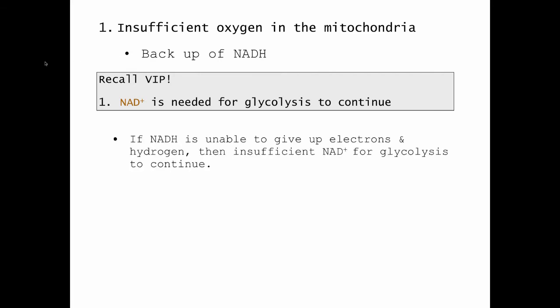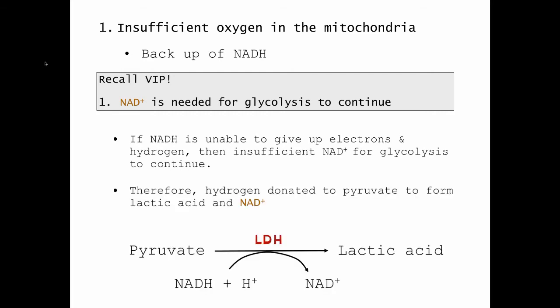So if NADH is unable to give up electrons and hydrogen at the electron transport chain, then there's insufficient NAD for glycolysis to continue. And therefore, as a stop gap, hydrogen is donated to pyruvate to form lactic acid.